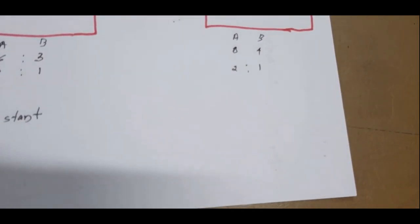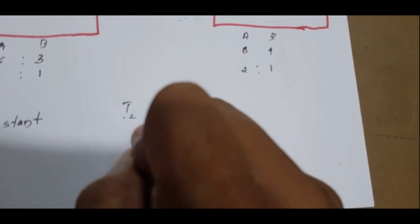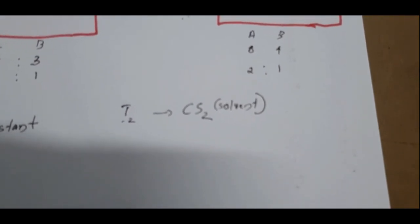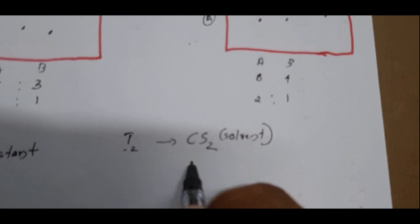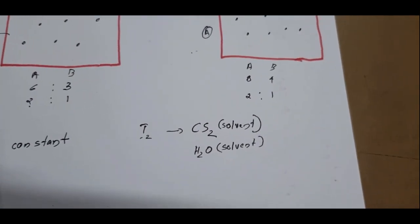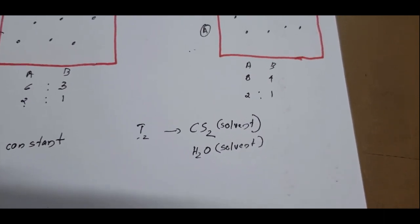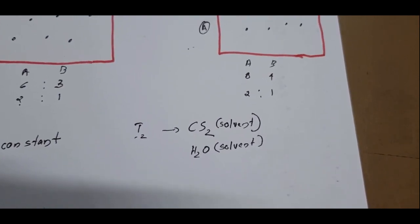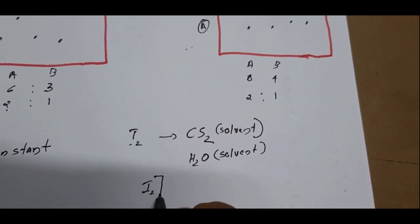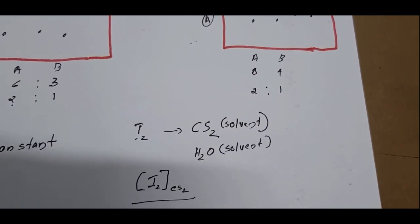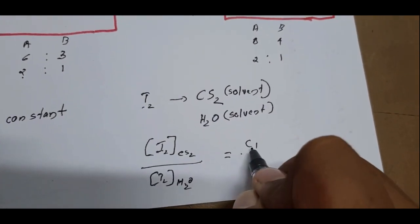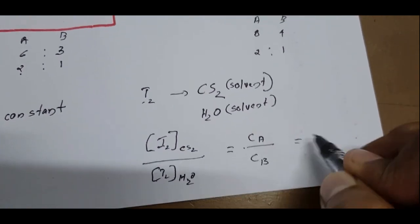For example, when a solution of iodine in carbon disulfide (CS₂) — where carbon disulfide is the solvent and iodine is the solute — at different concentrations is shaken with distilled water (H₂O), which is the other solvent, iodine is distributed between carbon disulfide and H₂O. At a given temperature, the ratio of its concentration in two layers was constant, irrespective of the amount of iodine. That is, the concentration of iodine in CS₂ divided by the concentration of iodine in H₂O — C_A by C_B — is a constant.